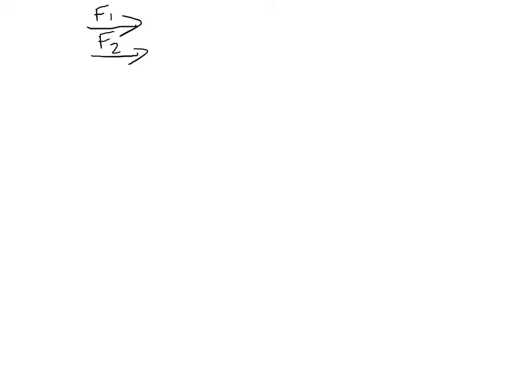If we have two vectors going off in the same direction, like force one and force two, what do we do with those two forces to get the net force? If they're in the same direction, we add them. So we're going to take F1 and add F2. That's easy enough.